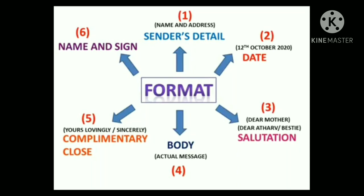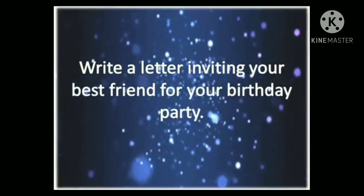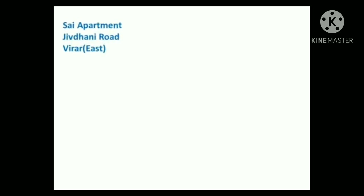Let's use the format and understand how to write a letter inviting your best friend to your birthday party. The first step is to write the sender's details, that is the sender's address. The second step is to write the date — let's say it is 12th October 2020. The third step is the salutation, so let's write 'Dear Bestie.'